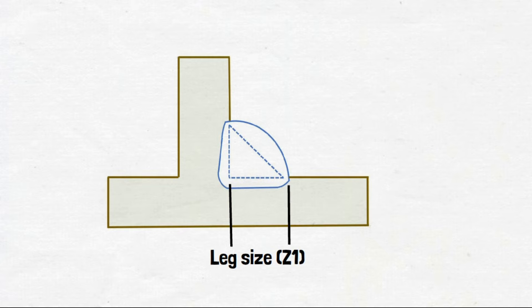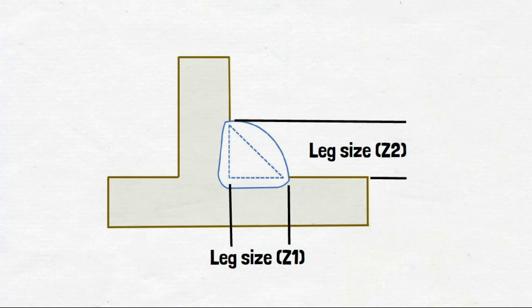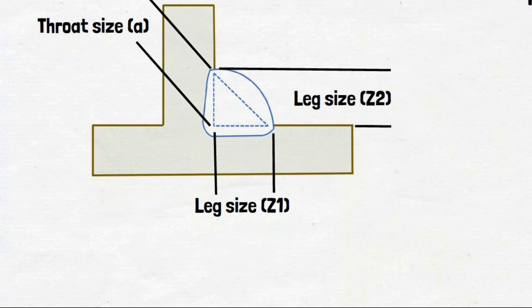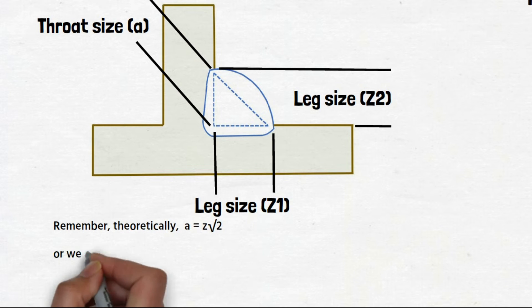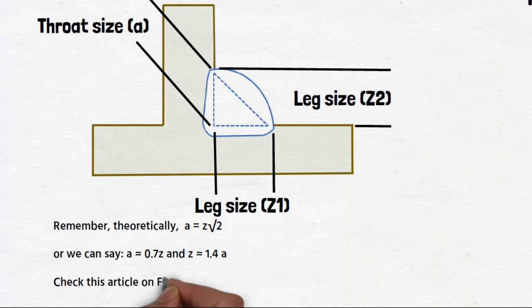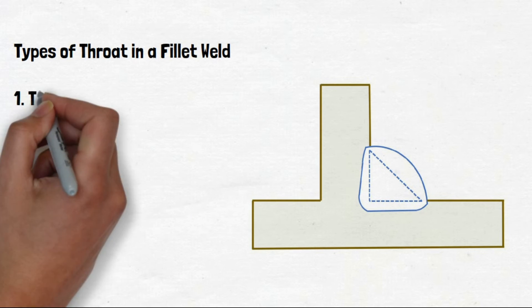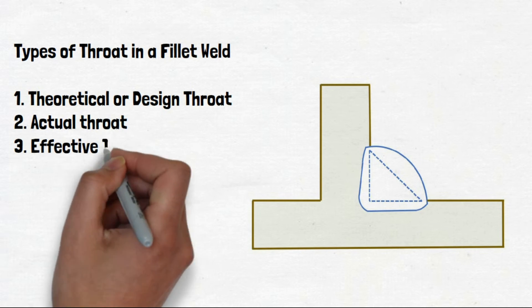Fillet weld size is measured by using leg sizes or throat size, also called A. You can convert weld leg length to throat size using the formula given here easily. A fillet weld has three types of throats: design throat, actual throat, and effective throat.